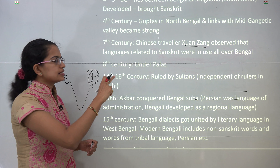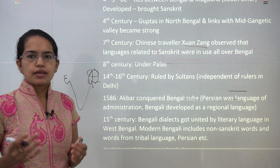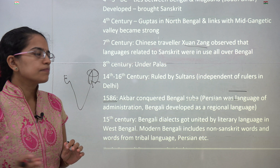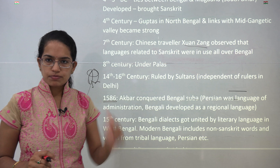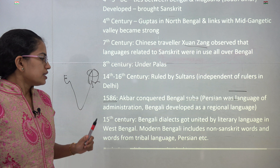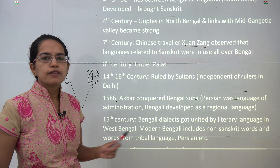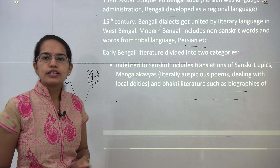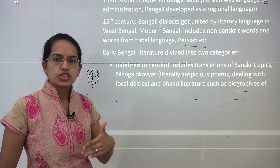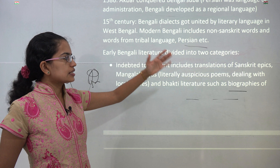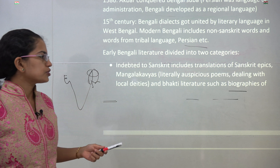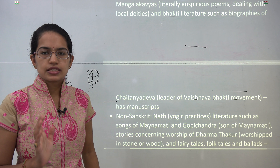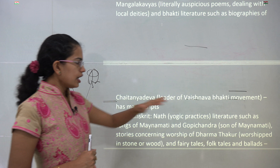In the 8th century the Pala dynasty was established. During the 14th to 16th century, Sultans came as independent rulers of Delhi. In 1586, Akbar conquered the Bengal region and during his period Persian became the language of administration; however, the regional language remained Bengali. During the 15th century numerous dialects in Bengali got united under a common language — Bengali. The Bengali language was divided into two categories: one which owed its origin to Sanskrit, and one which owed its origin to non-Sanskrit language. The Sanskrit-origin category included Sanskrit epics and Mangalkavya, the auspicious poems related to the Bhakti movement. Chaitanya Dev was a major leader who propagated the Sanskrit literature of Bengali and was a core Vaishnava.